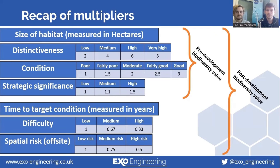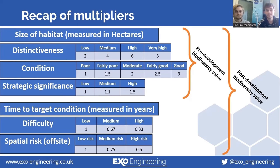Habitat condition is a measure of habitat quality, and this typically relates to how well a habitat is being managed, but can also refer to structural features such as percentage cover of undesirable species. Strategic significance depends on whether a habitat parcel falls within a strategic biodiversity area which has been identified in local policy.